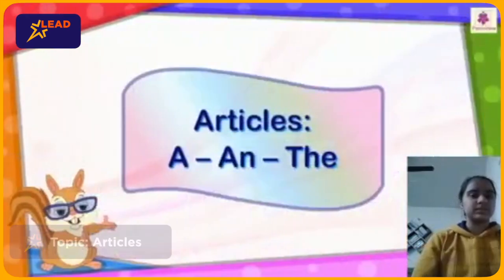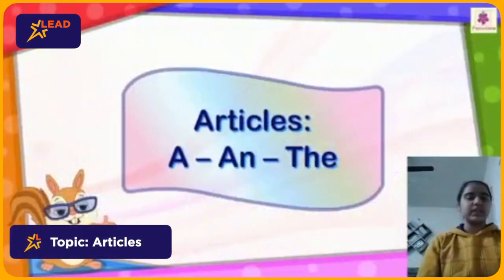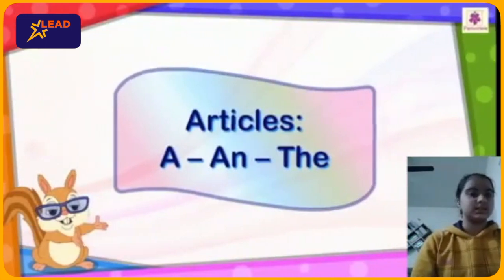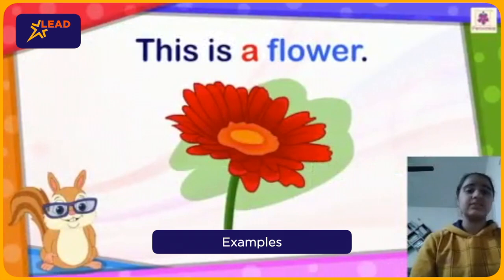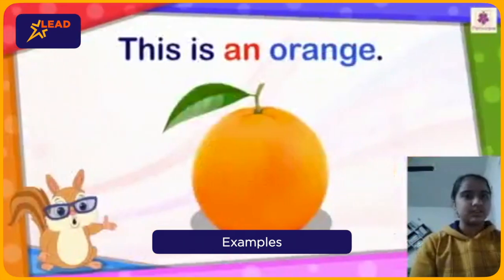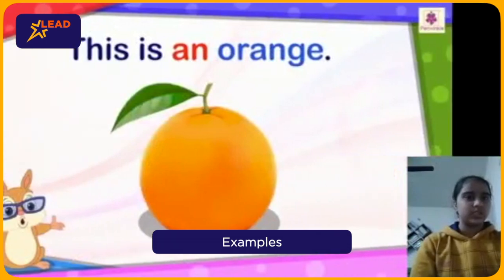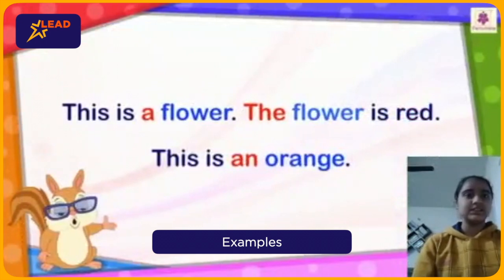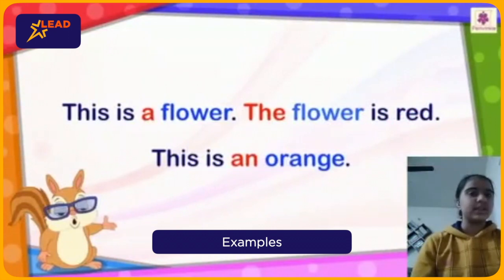Our topic is very easy — Articles: A, An, and The. This is a flower. The flower is red. This is an orange. A, An, and The — do you notice that we have used A, The, and An here? Let us understand why.